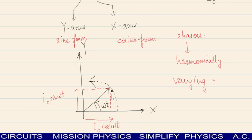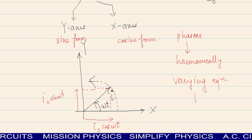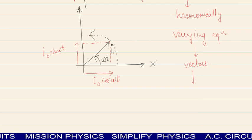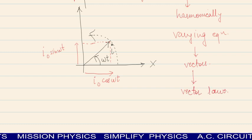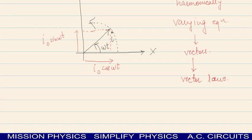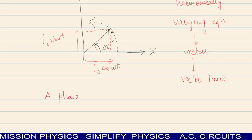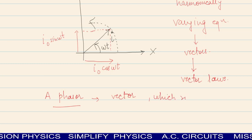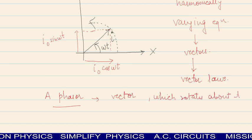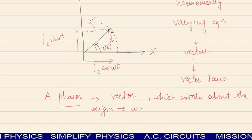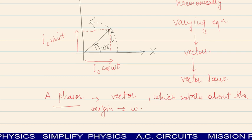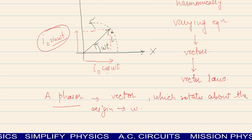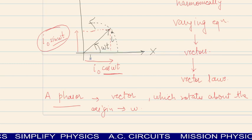Hence we get the rotating vectors, and if we want to add, subtract, or find the resultant of these vectors, we apply the vector laws. So what is the quick summary? A phasor is a vector which rotates about the origin with uniform angular velocity omega. The projection on y-axis gives us the magnitude of instantaneous EMF in the form of sine, and the projection on x-axis gives us the magnitude of EMF in the form of cosine. So this is all about the phasor.